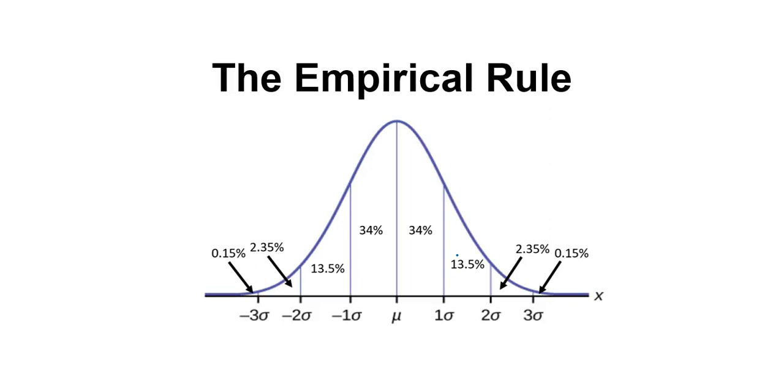So the first stop is actually the empirical rule, and the empirical rule is actually an estimation or an approximation rule that tells you what percentage of the data is located within a certain number of standard deviations of the mean. So this is an estimation rule, there's no technology used, it's just a rule that we're about to learn about.